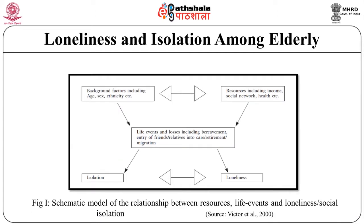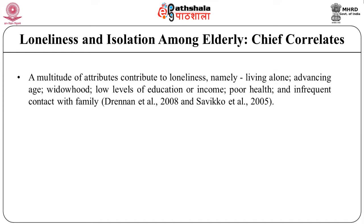A figure shows the schematic model of the relationship between resources, life events, and loneliness or social isolation. A multitude of attributes contribute to loneliness, namely: living alone, advancing age, widowhood, low levels of education or income, poor health, and infrequent contact with family. Besides poor health condition, poor vision, poor functional status, and hearing impairment also increase the prevalence of loneliness.